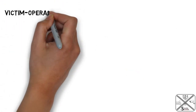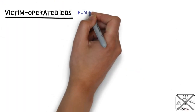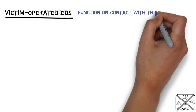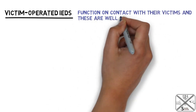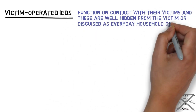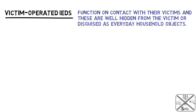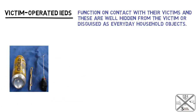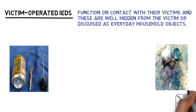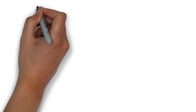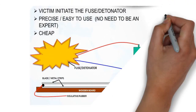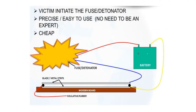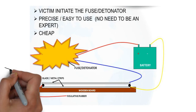Next are victim-operated IEDs. These IEDs function on contact with their victims and are well hidden from the victim or disguised as everyday household items like Pepsi cans, tiffin boxes, pressure plates, etc. When the object is moved, the IED switch is triggered.